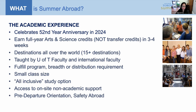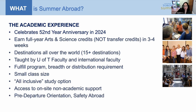Students take our programs for many reasons, including to fulfill program, breadth, or distribution requirements. Because of that, students in your courses won't necessarily be the same type you see on Toronto campuses — you'll meet students from different years, programs, and campuses. It's an opportunity to meet others from different faculties in a small classroom environment. In Oxford, most courses range between 25 to 30 students. You really get to know your fellow classmates and professors, and it's a great opportunity for field trips and to build connections for postgraduate school.